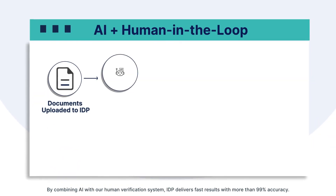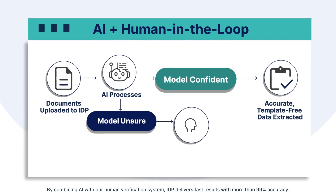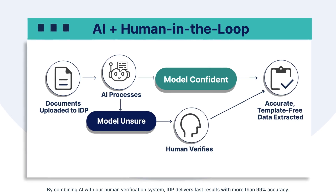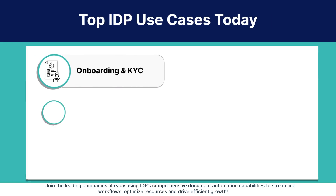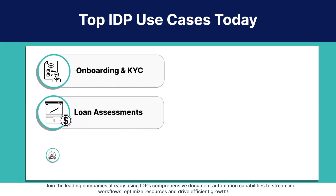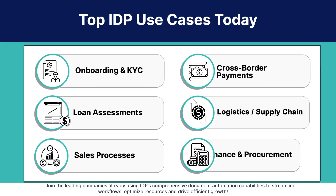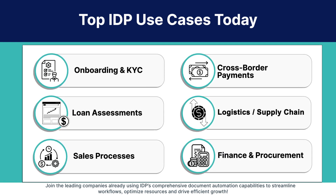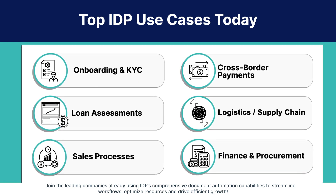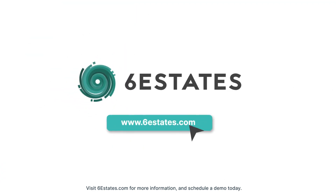By combining AI with our human verification system, IDP delivers fast results with more than 99% accuracy. Join the leading companies already using IDP's comprehensive document automation capabilities to streamline workflows, optimize resources, and drive efficient growth. Visit SixEstate's.com for more information and schedule a demo today.